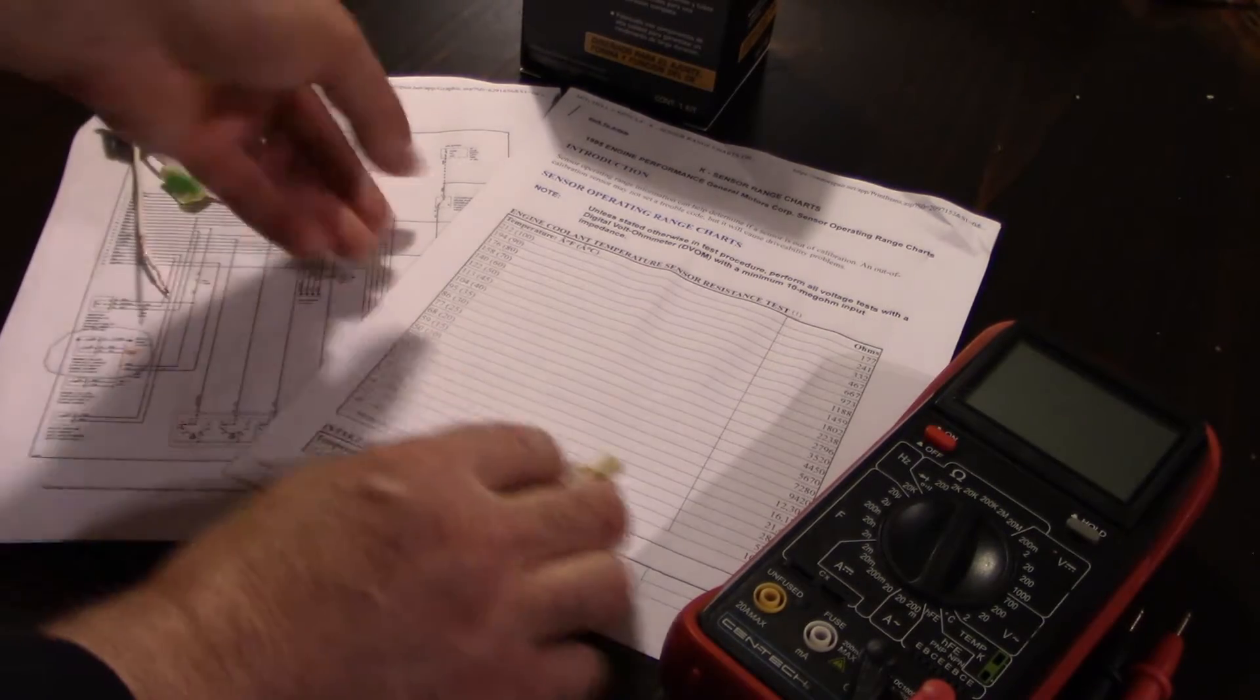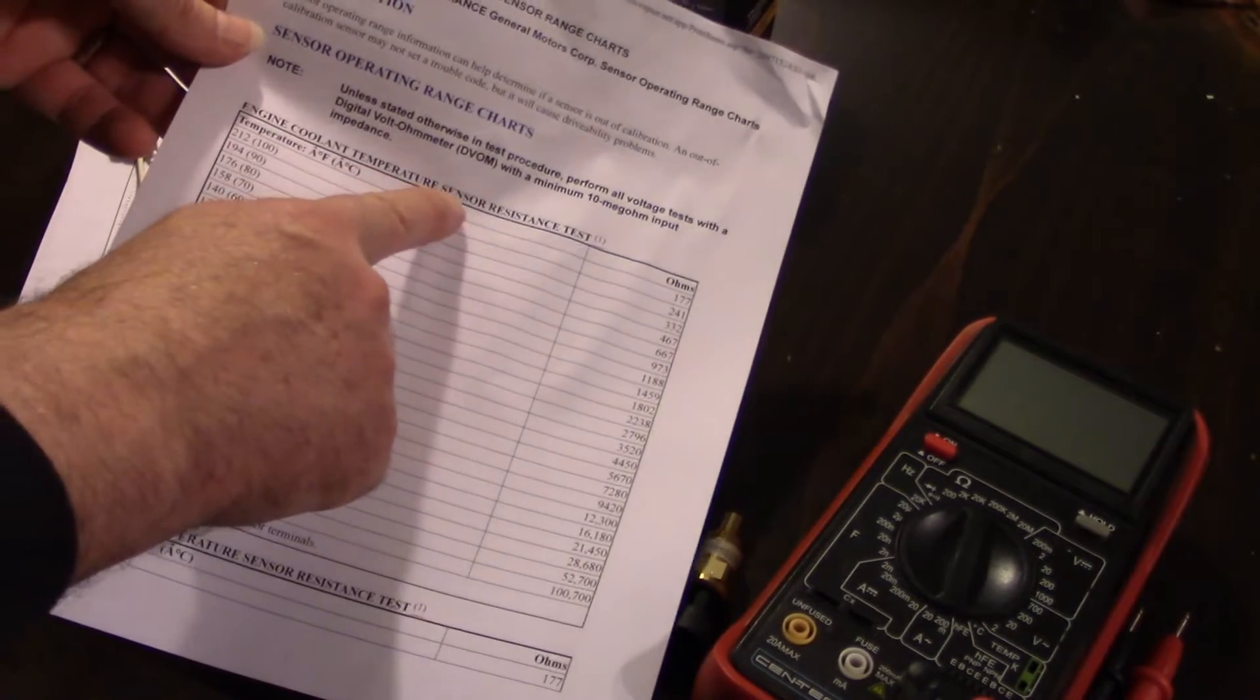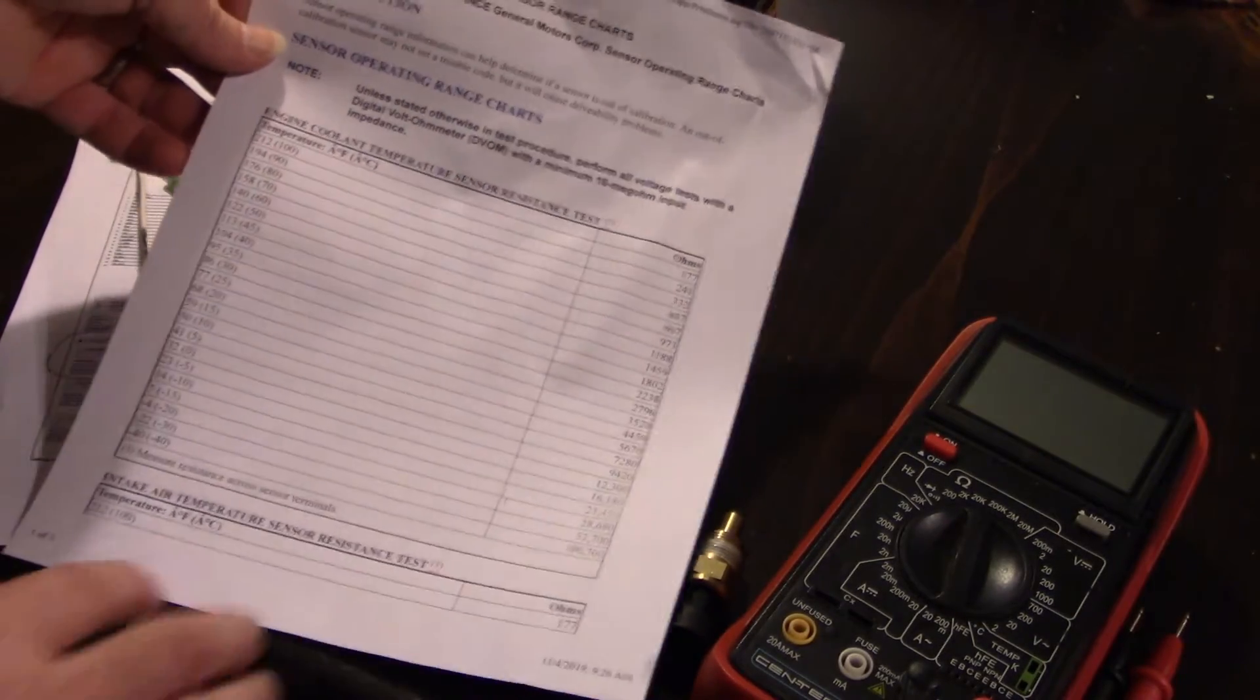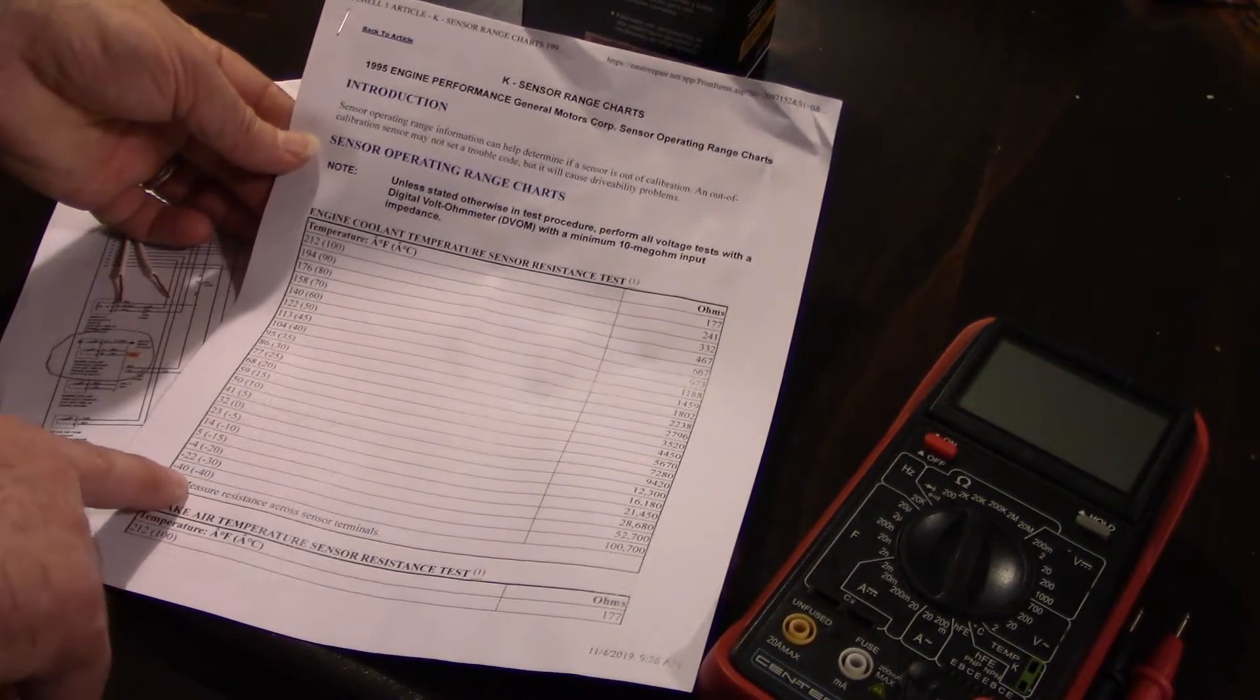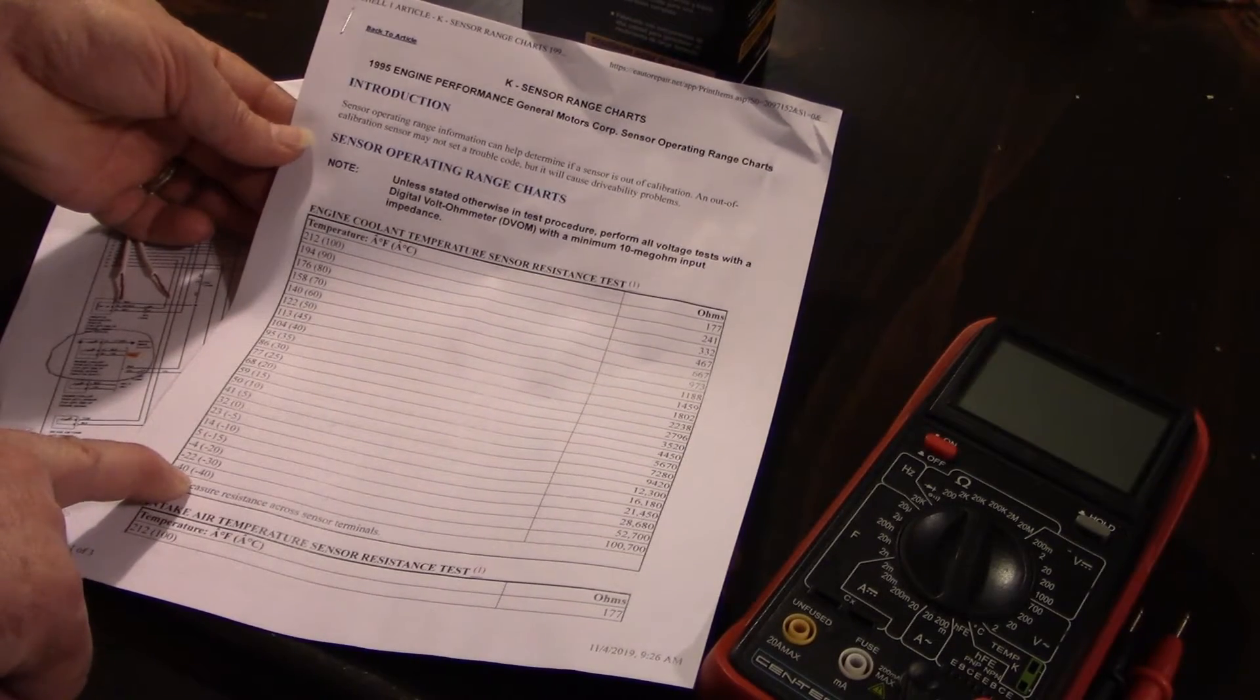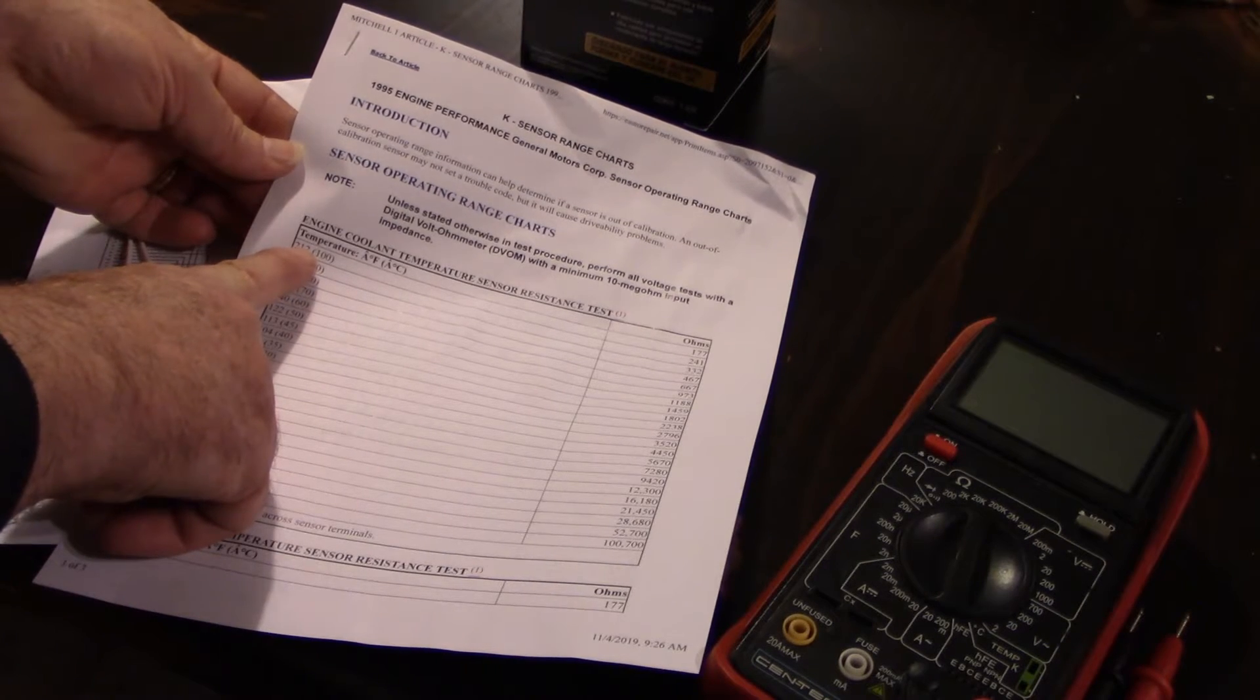So what I have here on this page is a printout of the engine coolant temperature sensor resistance test. What we have along the left-hand side is different temperatures ranging from negative 40 below zero to 212 degrees boiling Fahrenheit.